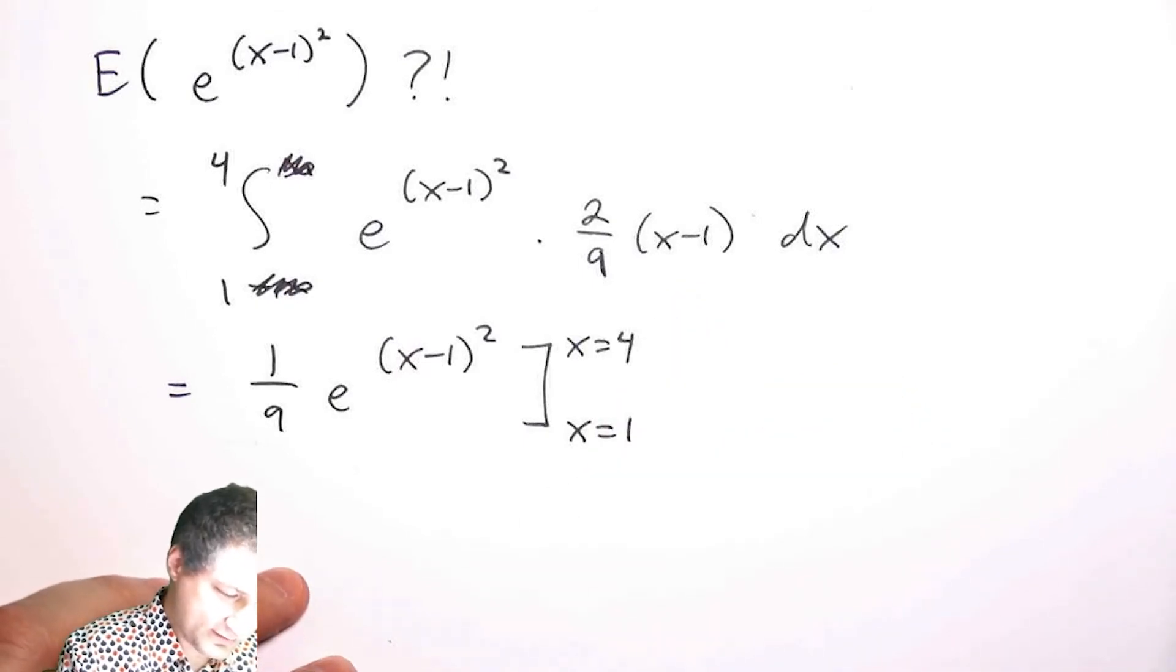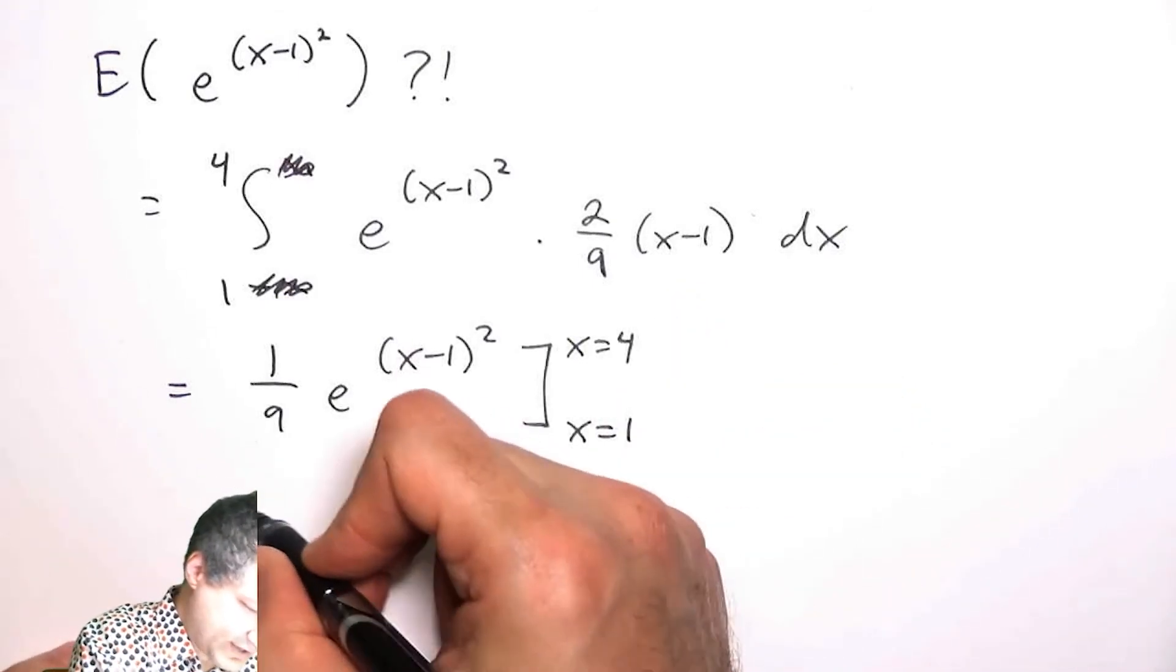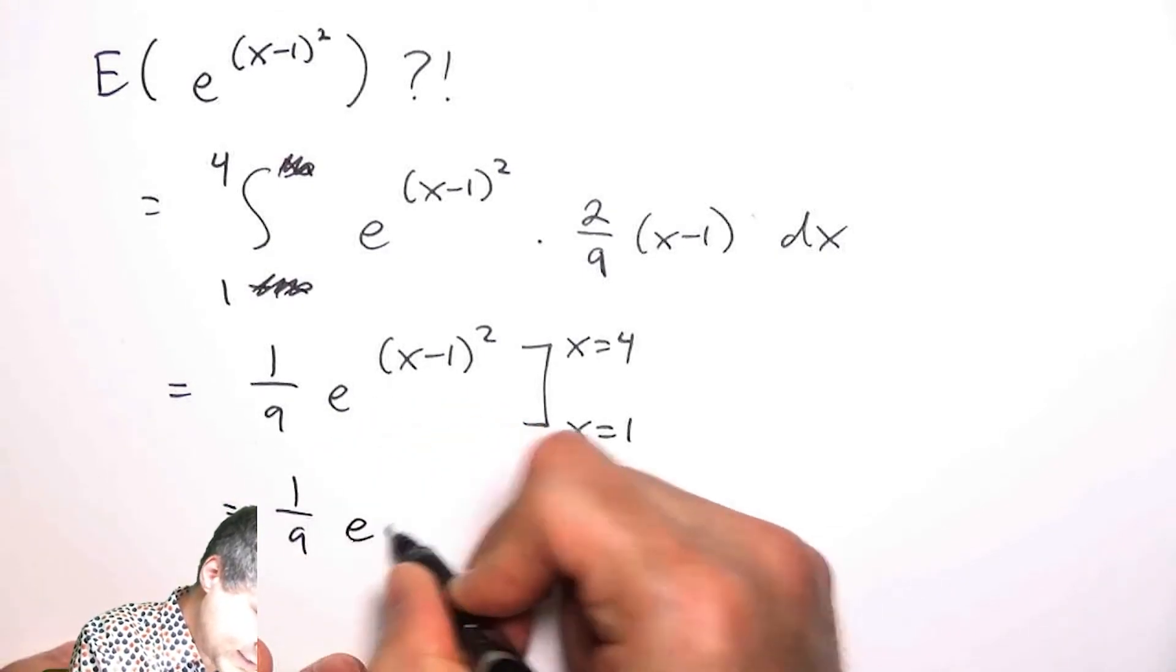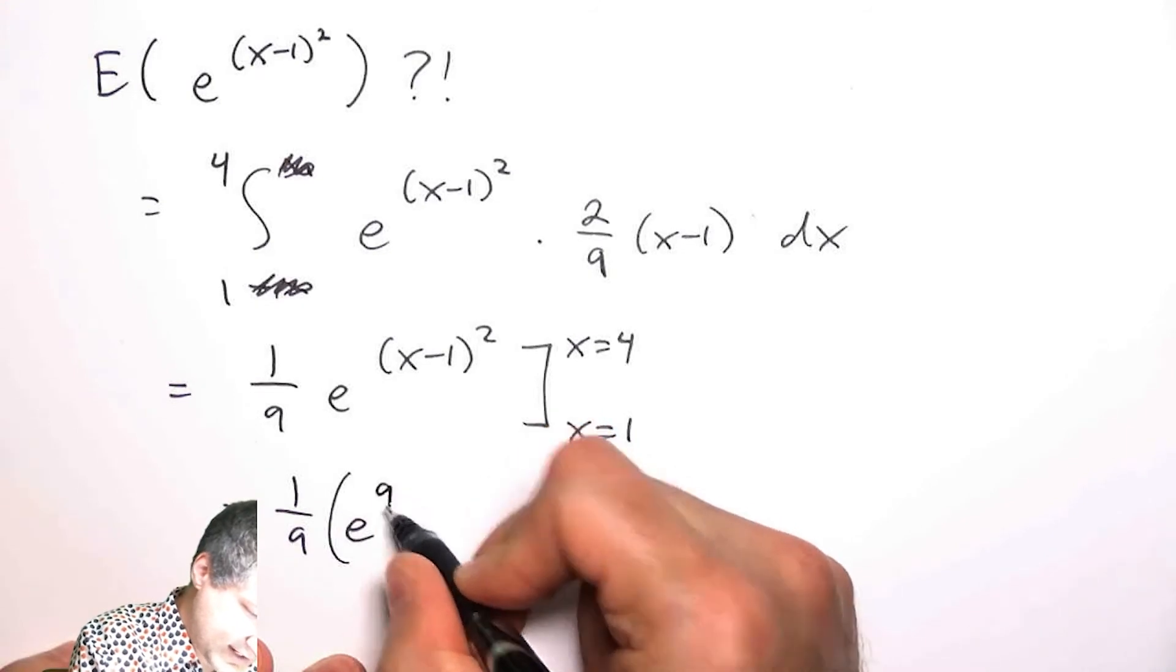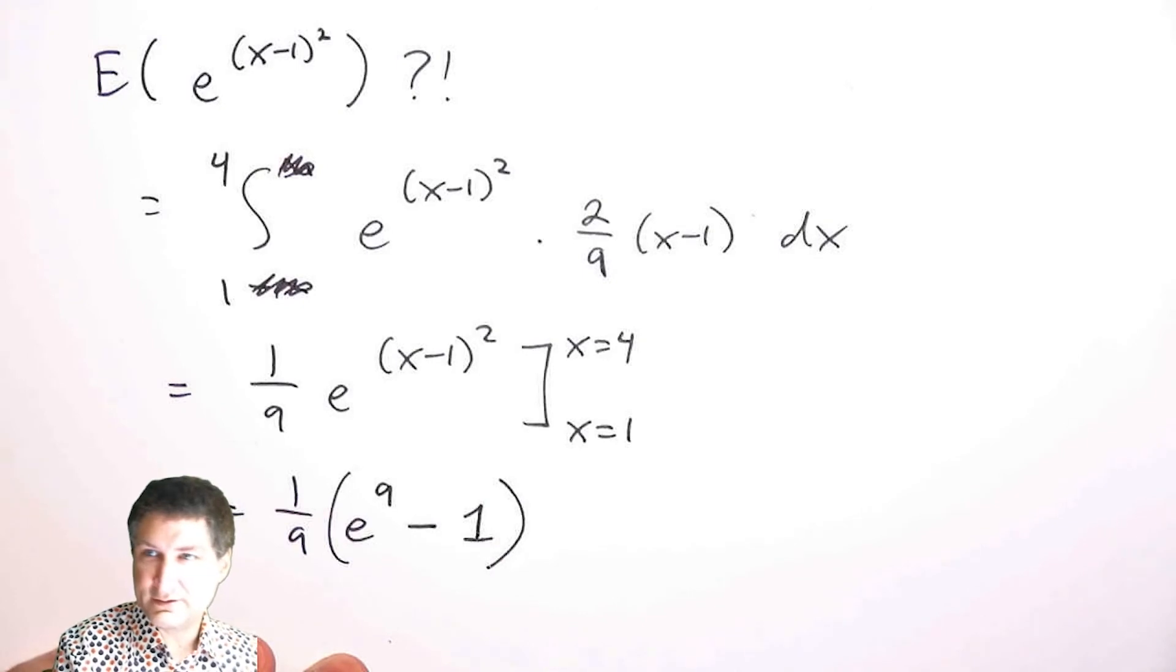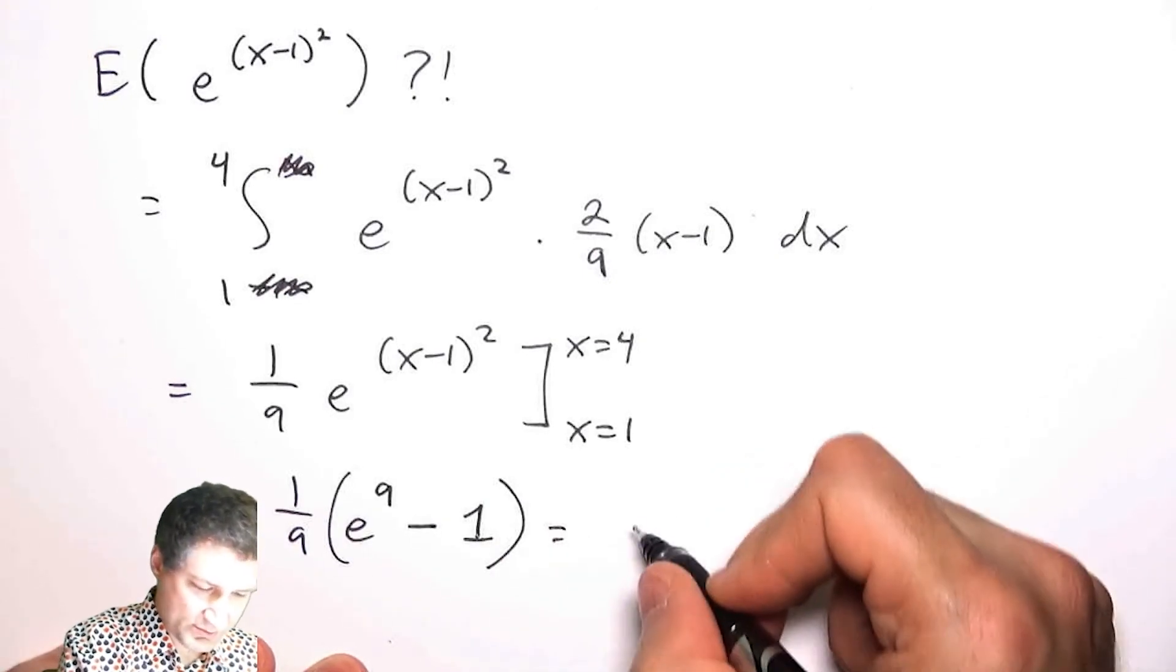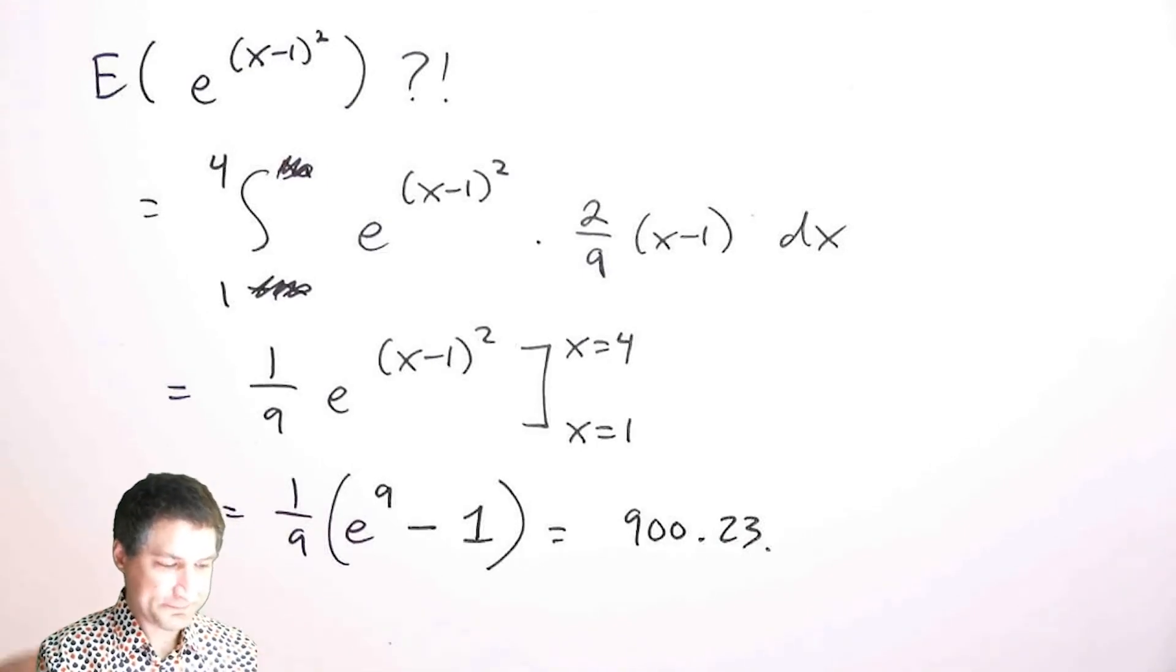So a little bit of a trick question. That means I have 1/9 e^(x-1)² evaluated from 4 to 1, which is 1/9(e⁹ - 1), and I can compute this number—turns out to be about 900. Keep in mind